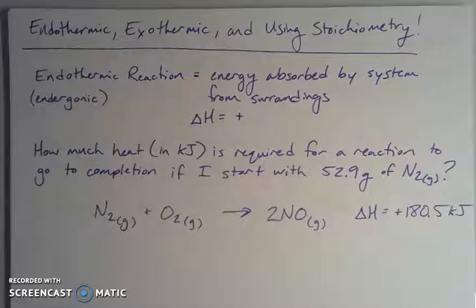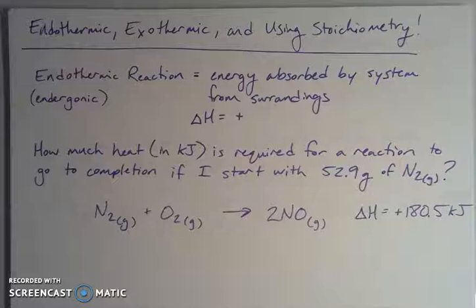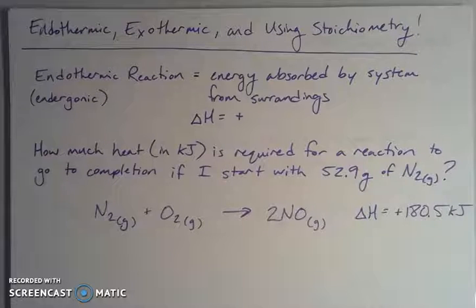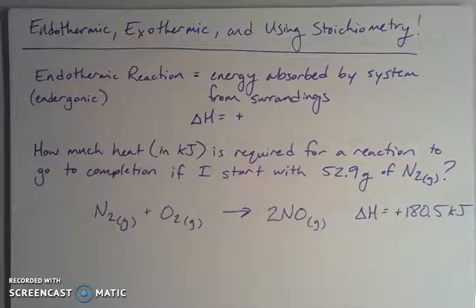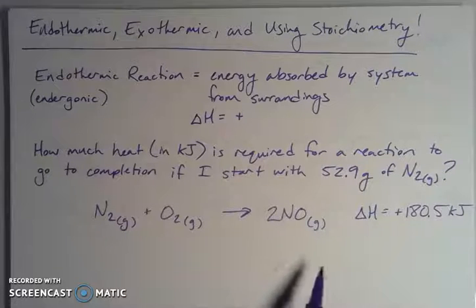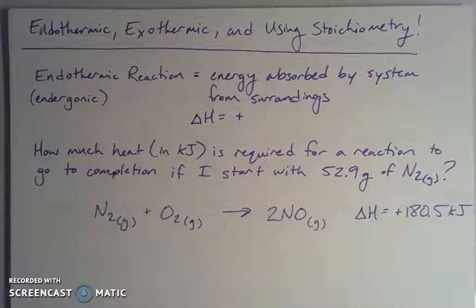Today I want to talk about endothermic reactions, exothermic reactions, and how we can use stoichiometry — this idea of converting one species in a chemical reaction to another — to figure out how much energy is produced or absorbed in a chemical process, given different starting or ending amounts. We can use the stoichiometric dimensional analysis process to get at quantities of energy, so long as we have a balanced chemical equation and we're given the delta H.